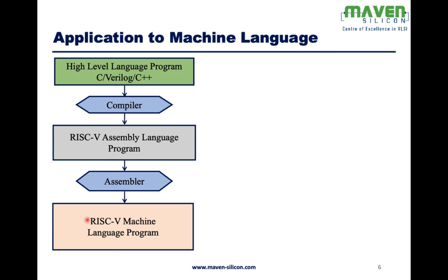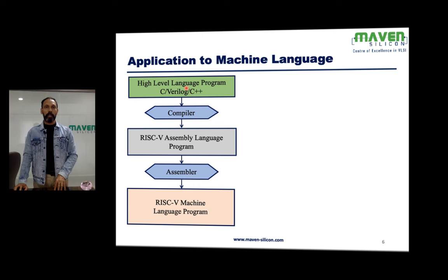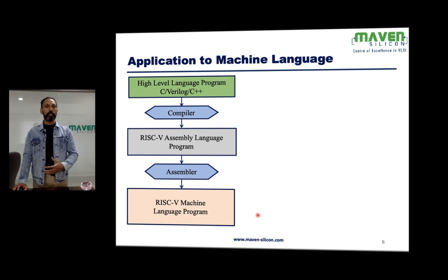Let me show you the transformation steps — how we convert software applications into machine language programs. Whatever applications we create using high-level languages like C or C++, they will be compiled into assembly language, and then the assembler converts the assembly language into machine language. Everything is going to be in binary, and the processor executes only the machine language program.